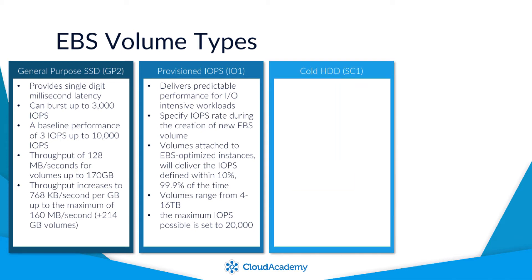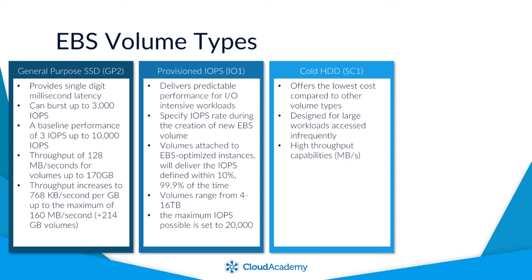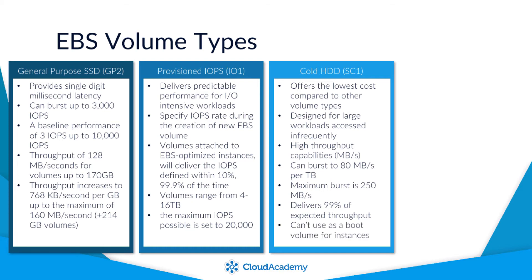Cold HDD volumes offer the lowest cost compared to all other EBS volume types. They are suited for workloads that are large in size and accessed infrequently. Their key performance attribute is throughput capability in megabytes per second. They have the ability to burst up to 80 megabytes per second per terabyte, with a maximum burst capacity of 250 megabytes per second per volume. They deliver the expected throughput 99% of the time over a given year, and it's not possible to use these as boot volumes for your EC2 instances.